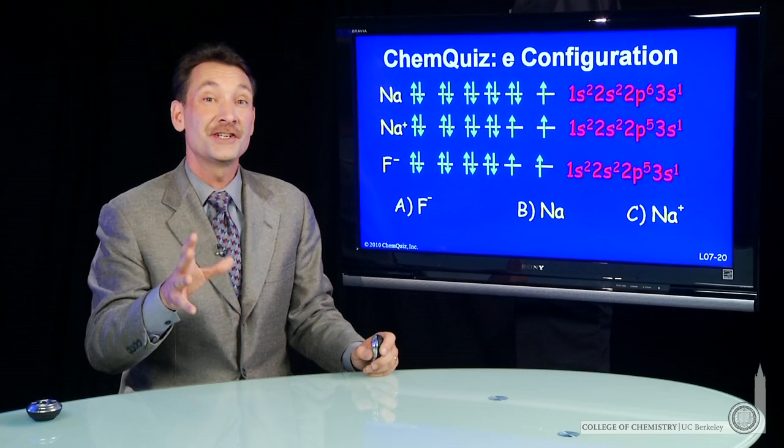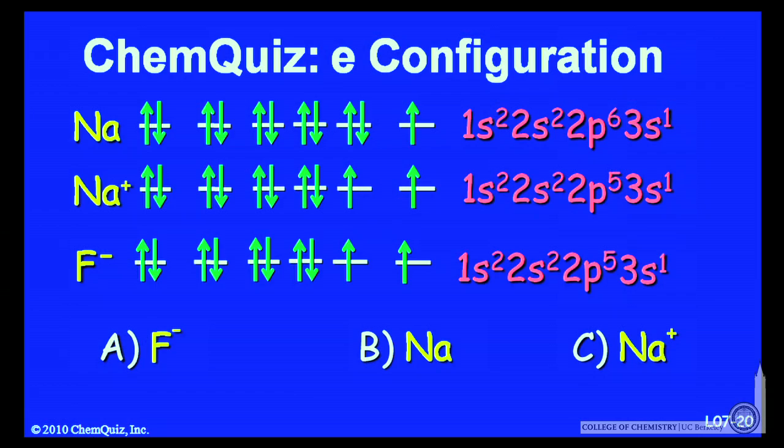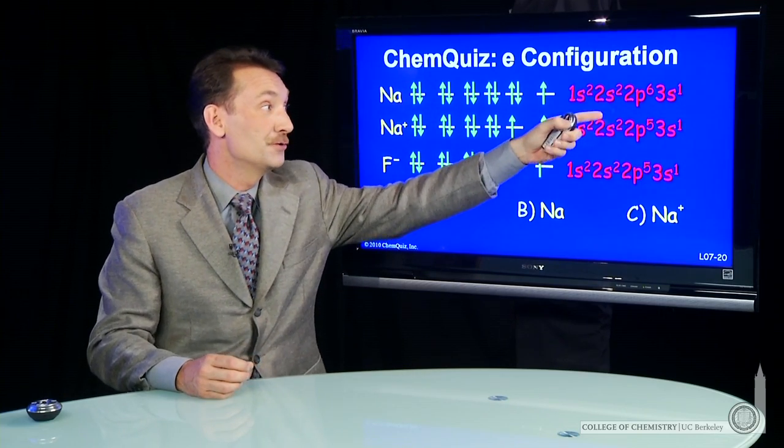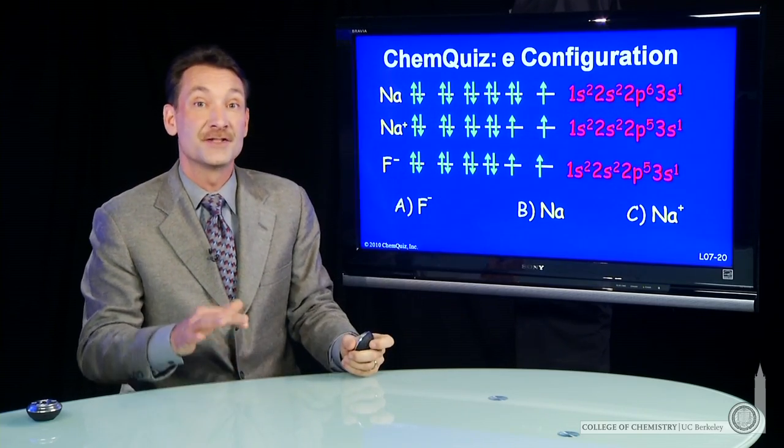We're looking at an electronic configuration, and we're trying to pair it to one of these species. So sodium has 11 electrons in its neutral state. 1s2, 2s2, 2p6, 3s1 is its ground state.